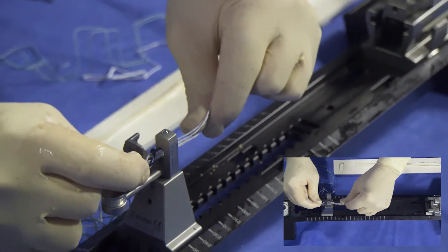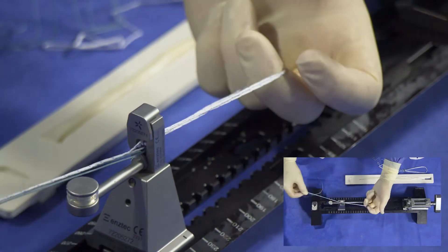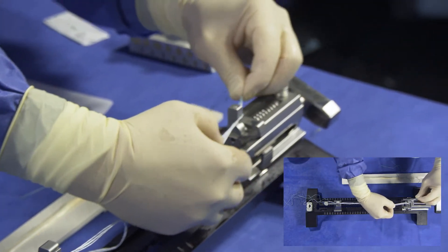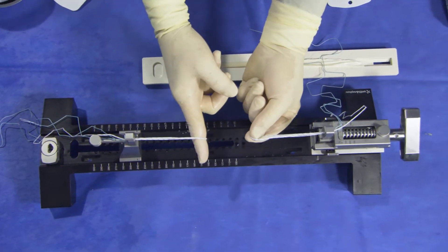Once harvested, the semi-tendinosis tendon graft is prepared using the Smith & Nephew X-Wing Graft Preparation Station. Two ultra buttons are utilized and loaded onto the station. To load, the clamps are opened and then closed around each button.